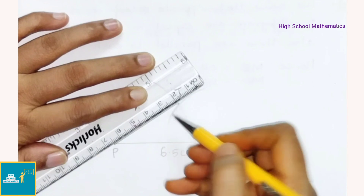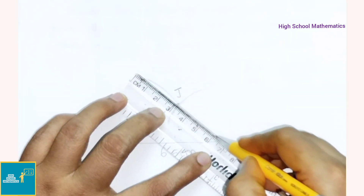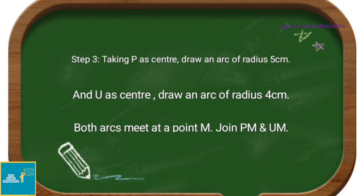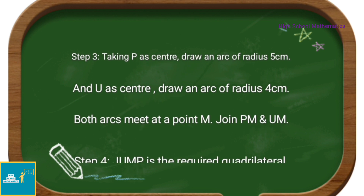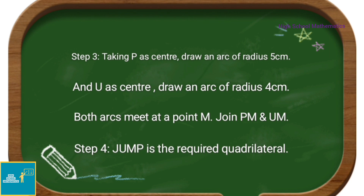Join PJ and JU. Now with P as center and U as center, draw arcs of radius 5 cm and 4 cm respectively. Both arcs meet at point M — join PM and UM. Therefore JUMP is the required quadrilateral.